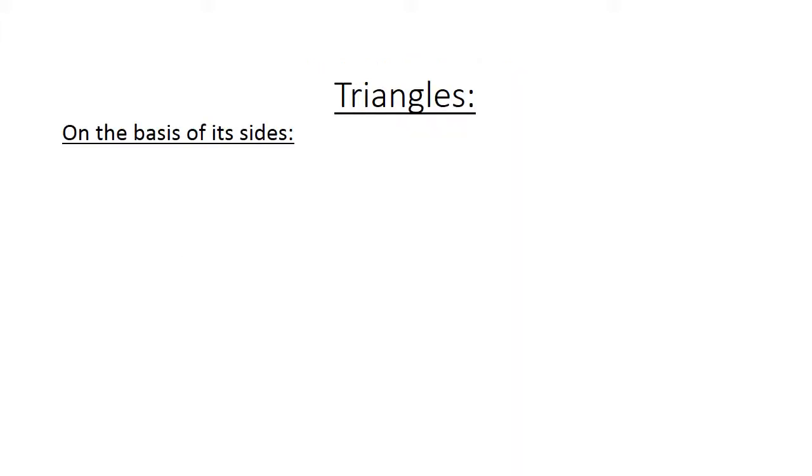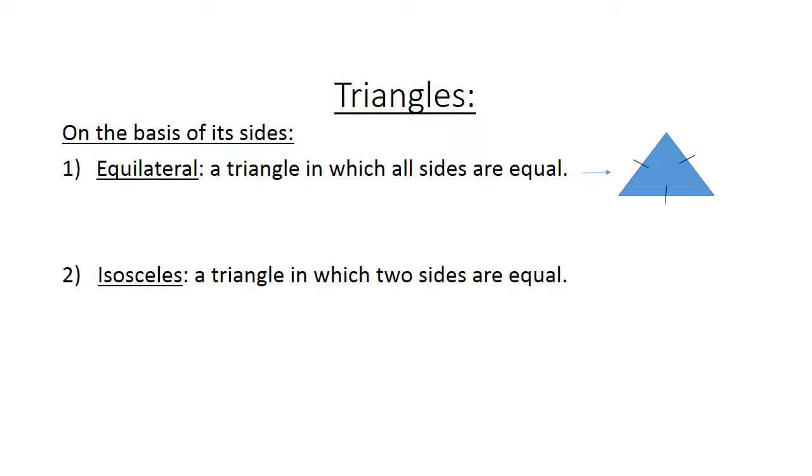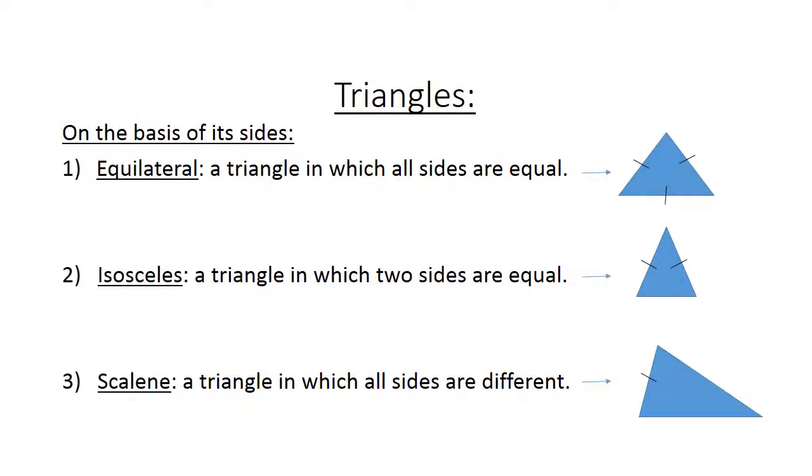Triangles on the basis of each side. 1. Equilateral, a triangle in which all sides are equal. 2. Isosceles, a triangle in which 2 sides are equal. 3. Scalene, a triangle in which all sides are different.